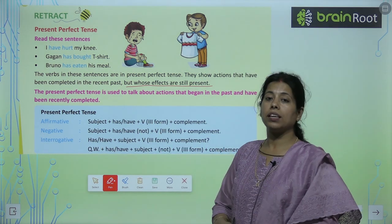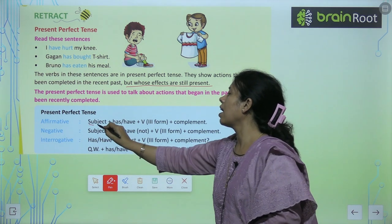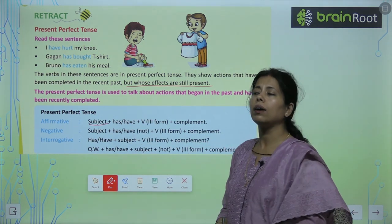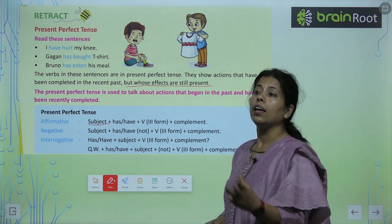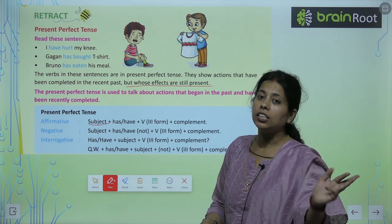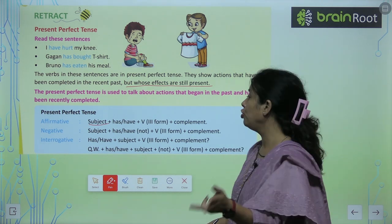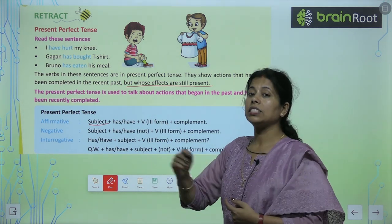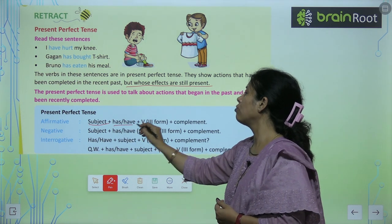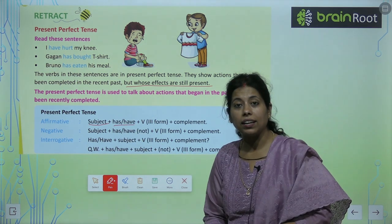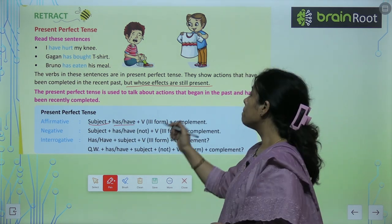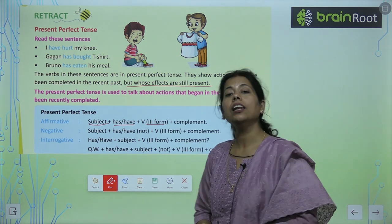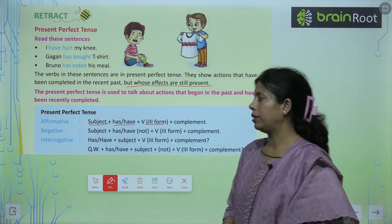Kaise bante hain ye sentences? Subject aayega — Ram, Seeta, he, she, they, we, you, all. Uske saath hum has aur have ko add karenge, plus third form of verb, and then compliment.